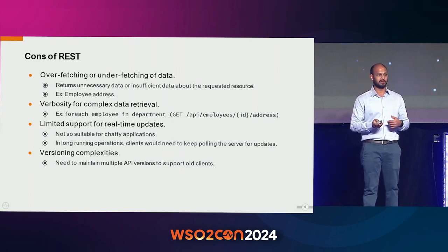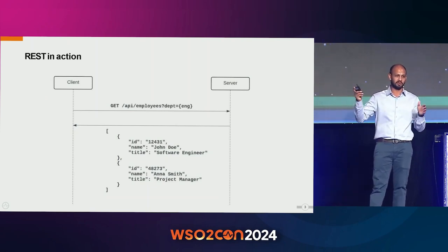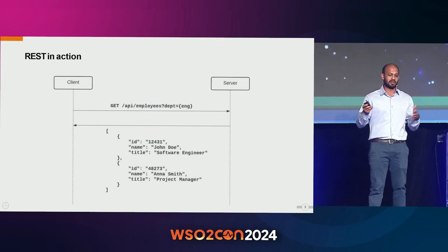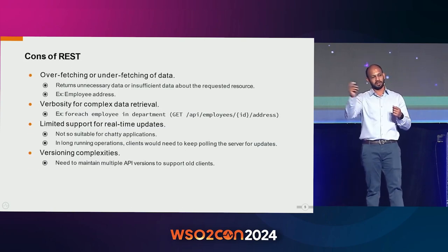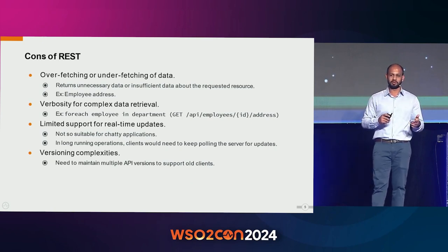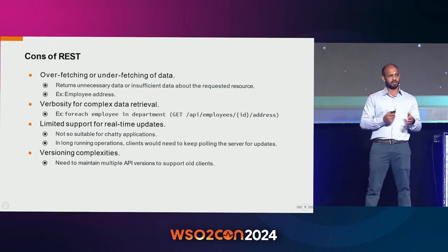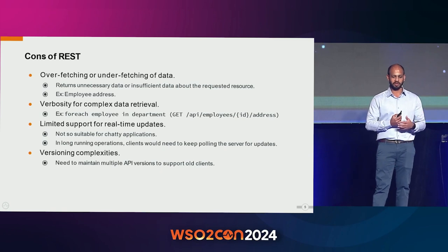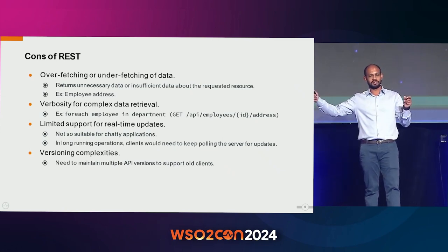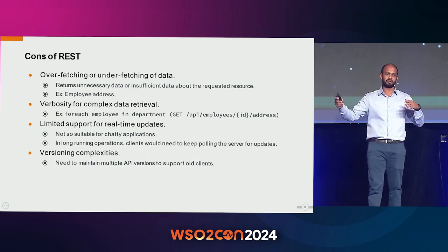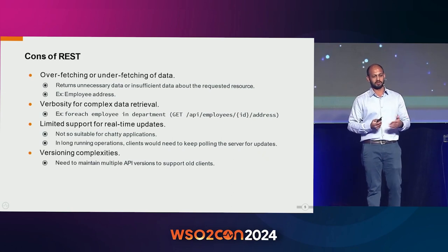On the downside, REST has an overfetching and underfetching problem. For example, if you want employee addresses, you get a lot of data without addresses, so you then have to iterate through each employee and call the address endpoint repeatedly — a lot of unnecessary data exchanged. There's also limited support for real-time updates. Versioning is complicated because the version is typically in the URL, meaning you may need to keep multiple versions running simultaneously even for backwards-compatible changes.